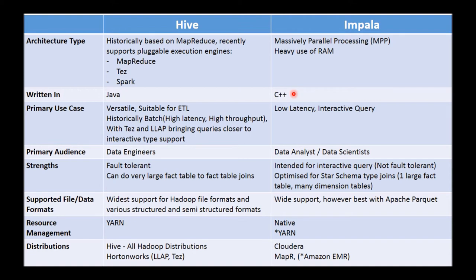That's interesting because if you wanted to squeeze the maximum performance out of any system, C++ represents a good investment. In a nutshell, you can see some of the building blocks of how these two systems were built using different technologies. While that doesn't necessarily imply that Java-based technologies are slower, the builders of Impala really wanted to focus on performance from the ground up.